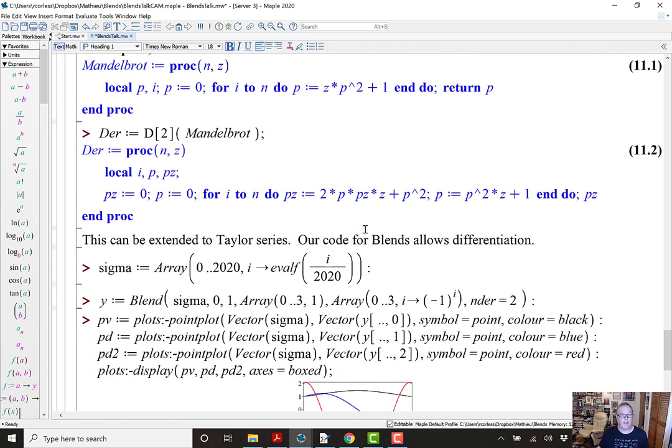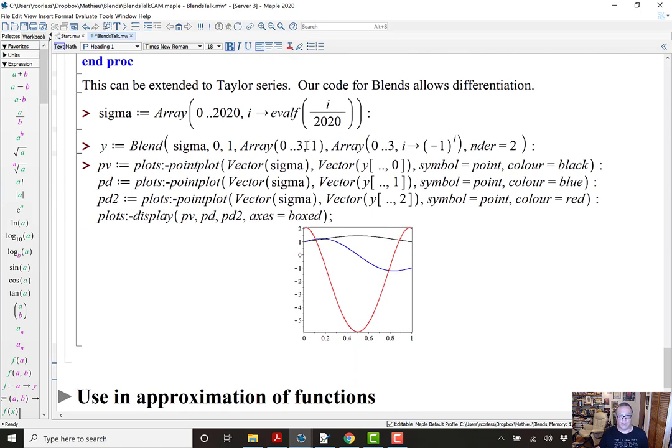So, as an example of that, here is a function which has Taylor coefficients 1, 1, 1, 1 on the left, and 1, minus 1, 1, minus 1 on the right. And we ask for the values of the blend, and the values of the derivative of the blend, and the values of the second derivative of the blend. So, ender means that I want all derivatives up to and including ender equals 2, and they get put into the 0 component, the 1 component, and the 2 component of a vector in the result. So, there we go. The function there is plotted in black, the derivative is plotted in blue, and the second derivative plotted in red. Right, very convenient.